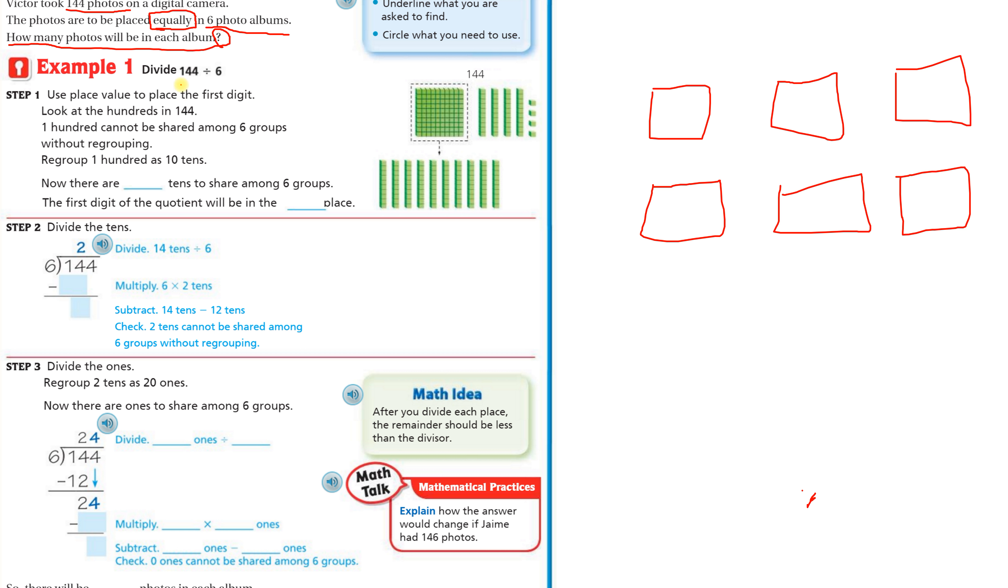Today's lesson is exactly how your parents and I learned how to divide. Step one, use place value to place the first digit. Look at the hundreds in 144. 100 cannot be shared among six groups without regrouping. Regroup 100 as 10 tens. Now there are 14 tens total.